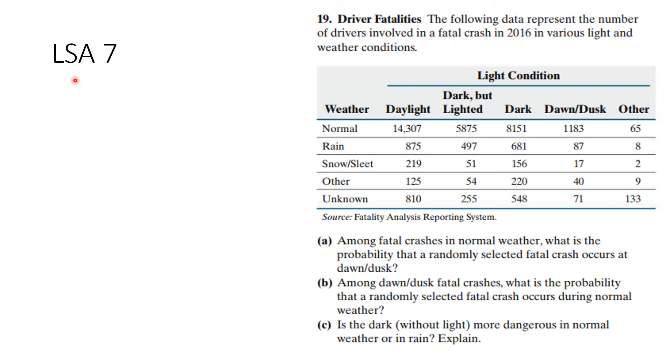And I'm also deploying the LSA number 7 that deals with driver fatalities. The following data represent the number of drivers involved in fatal crashes in 2016 in various light conditions. And you see we've got different kinds of weather that is happening. Daylight, dark, dawn, dusk, and other. And you answer these questions. Among fatal crashes in normal weather, what's the probability that a randomly selected fatal crash occurs at dawn or dusk? Among dawn or dusk fatal crash fatalities, what's the probability that a randomly selected fatal crash occurs during normal weather? And then you can say, is the dark without light more dangerous in normal weather or in rain? And so these are three separate questions that I'm asking you to answer using this data up here. And there's additional information posted. This learning low stakes assessment is posted in your syllabus tab. And if you look at the PDF upload, you'll be able to see when it is due as well.